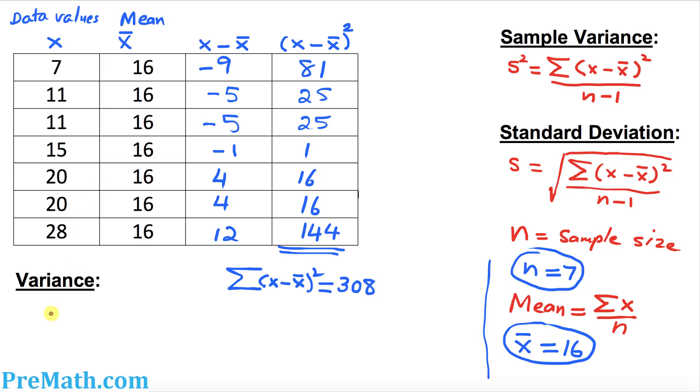Now we want to find the variance. Variance is always represented by s squared. So our variance is s squared. The formula is on the right-hand side: x minus x bar squared divided by n minus 1. We figured out this one right up here, which is 308.